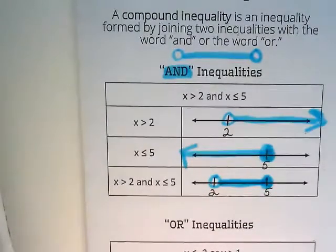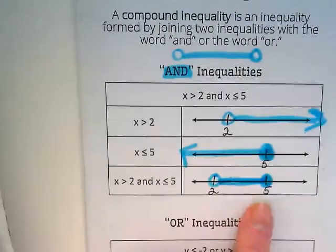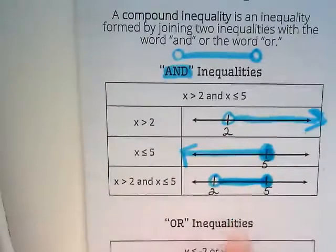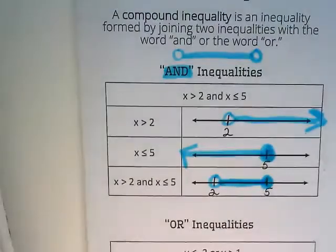What this means is any number that's greater than 2 and goes up to and including 5 would make this compound inequality true. That's what we're graphing when we, or showing when we graph that.